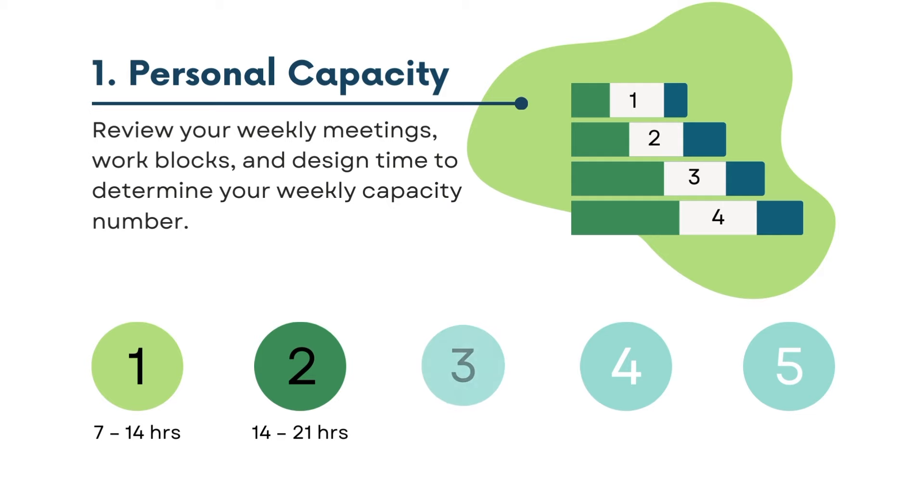A two is usually when you're at the beginning of projects, getting up and running and not spending so much actual time executing — a lot of meeting time really. A capacity number of three means you have between 21 and 28 hours worth of time to work that week. This is a completely normal average space to be. A three and a four is usually where you're going to be throughout the weeks, especially if you have multiple projects on your plate.